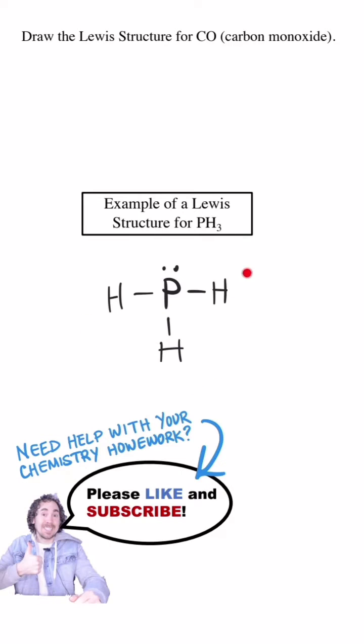A Lewis structure is a representation of the valence electrons in a molecule. It shows the bonded pairs of electrons as lines between the symbols for the atoms, and it shows the lone pairs of electrons as two dots.